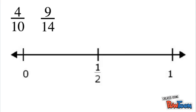Lastly, let's compare two fractions using this method of referring to 1 half. We're given 4 tenths and 9 fourteenths. Let's first start with 4 tenths. We look at the denominator and see that it's 10. So we ask ourselves, what's half of 10? It's 5. So 5 tenths is 1 half.